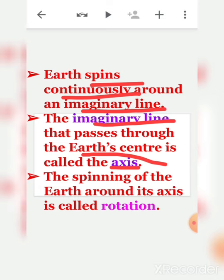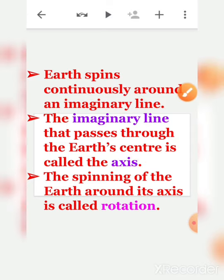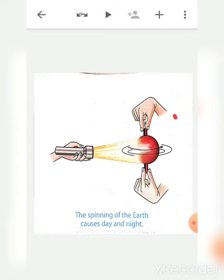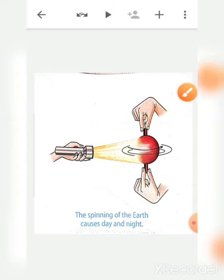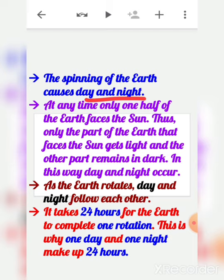The spinning of the earth around its axis is called rotation. You can see in the picture this imaginary line passing through the earth's center — that is the axis. The spinning of the earth around its axis causes day and night. At any time, only one half of the earth faces the sun, so only that part gets light while the other part remains in dark.